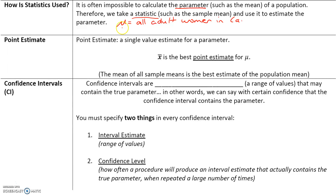Let's say we want to find the mean height of all adult women in California. If we did not use a sample, we would have to approach every adult woman in California, measure her height, and then take the mean of all those heights. This is impractical, very time-consuming, very expensive, and uses a lot of resources.